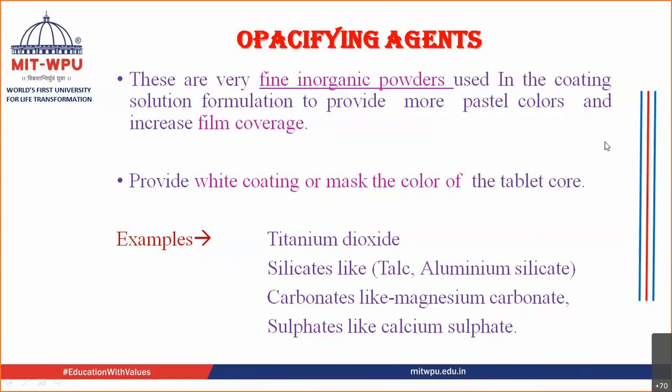The examples of opacifying agents are titanium dioxide, silicates such as talc and aluminum silicates, carbonates such as magnesium carbonate, and sulfates such as calcium sulfate. These are the different opacifying agents that can be added to your coating solution.